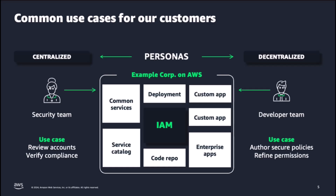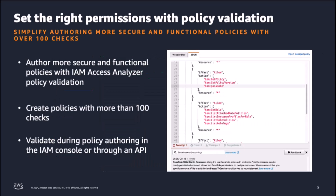In order to ensure that security standards are met, security teams review the policies before they are rolled into production. These policy reviews are manual and require comprehensive knowledge of IAM policies, especially when the policies are long and complex. This process slows down innovation and keeps security teams away from focusing on high-value tasks.